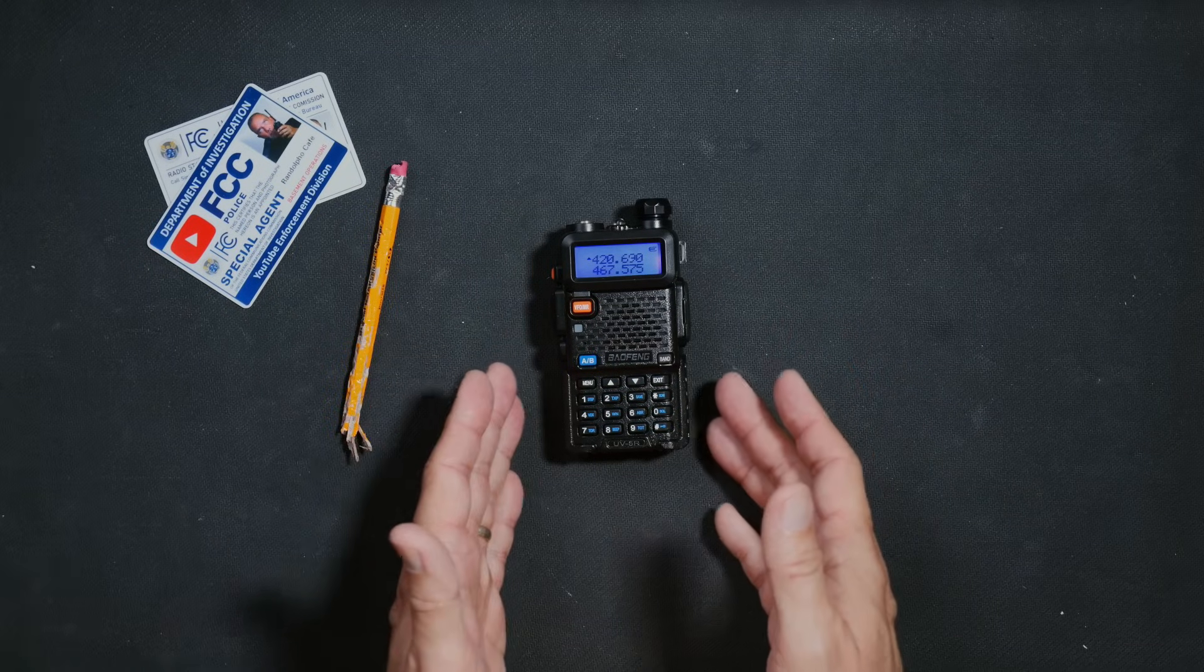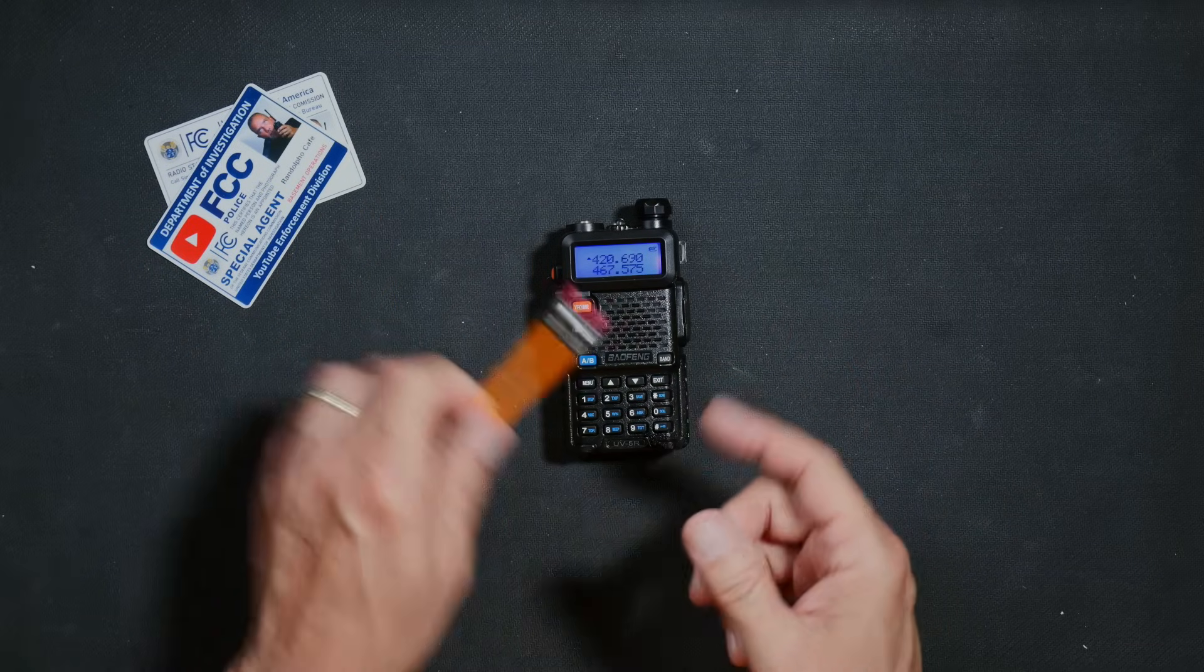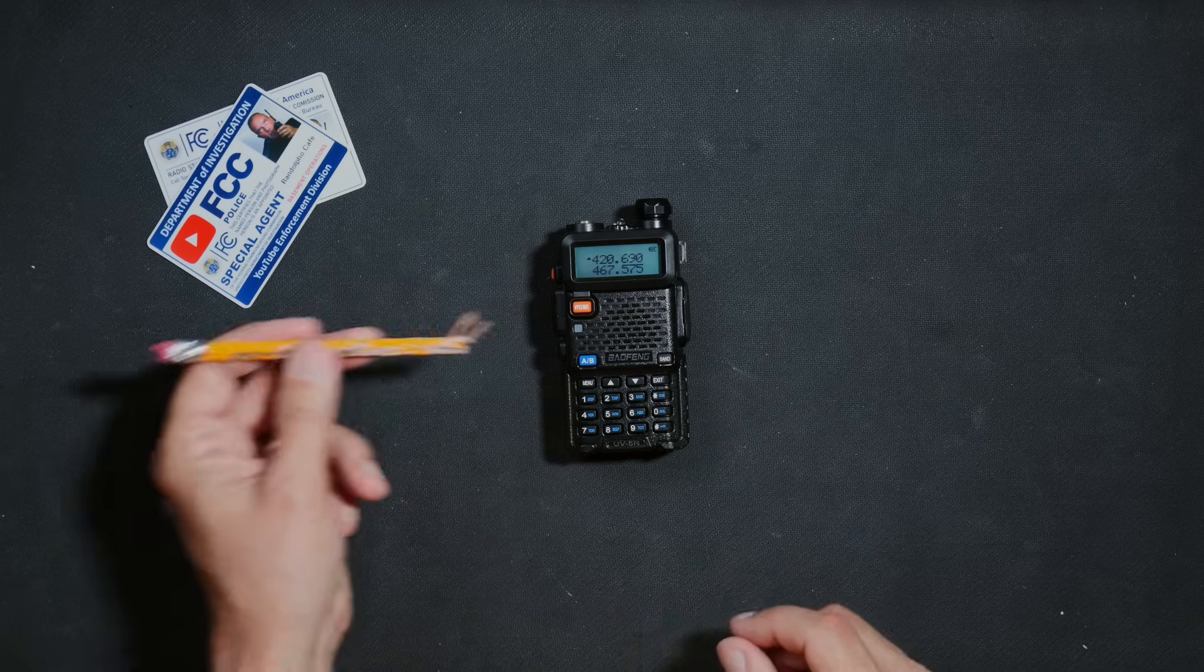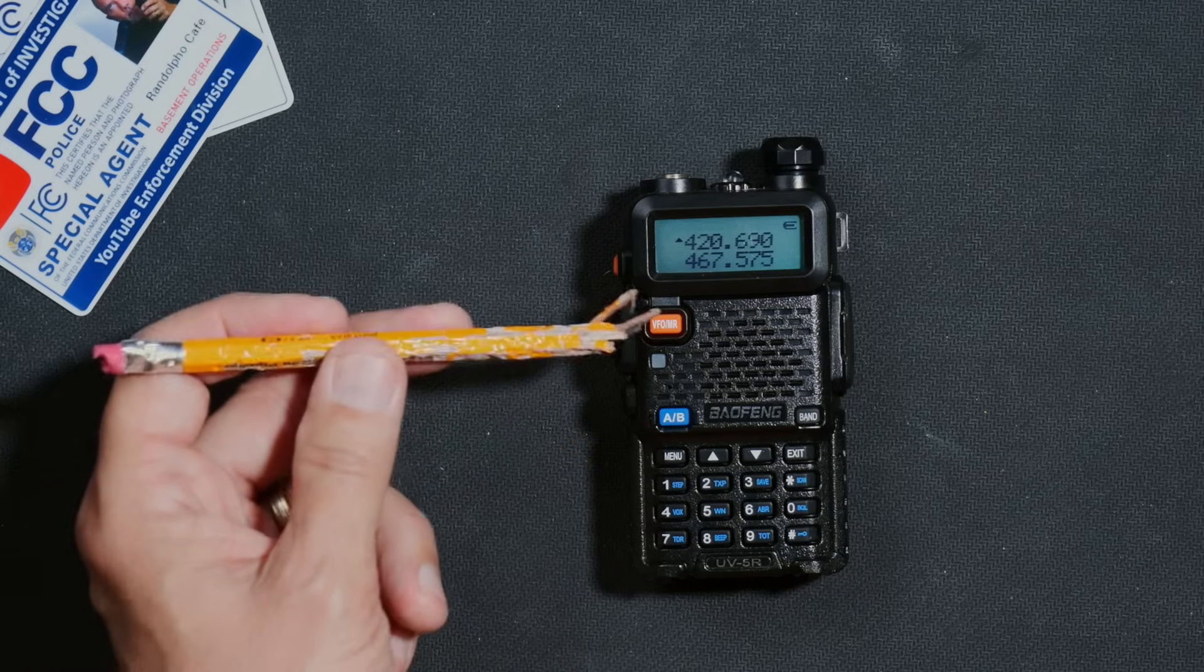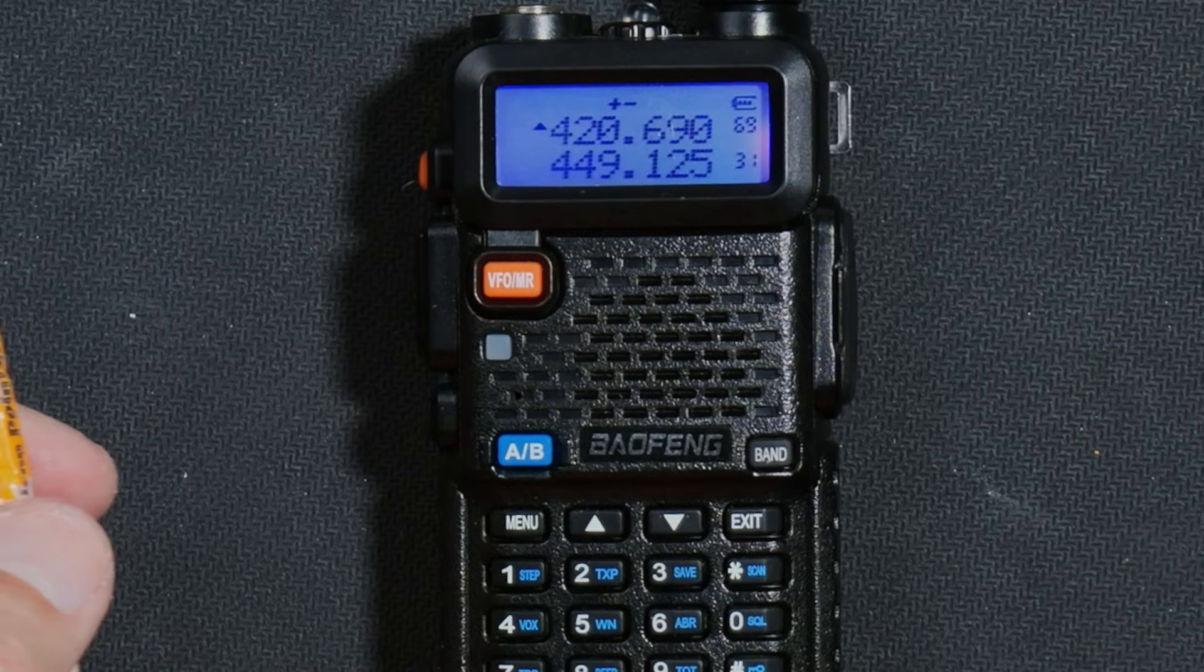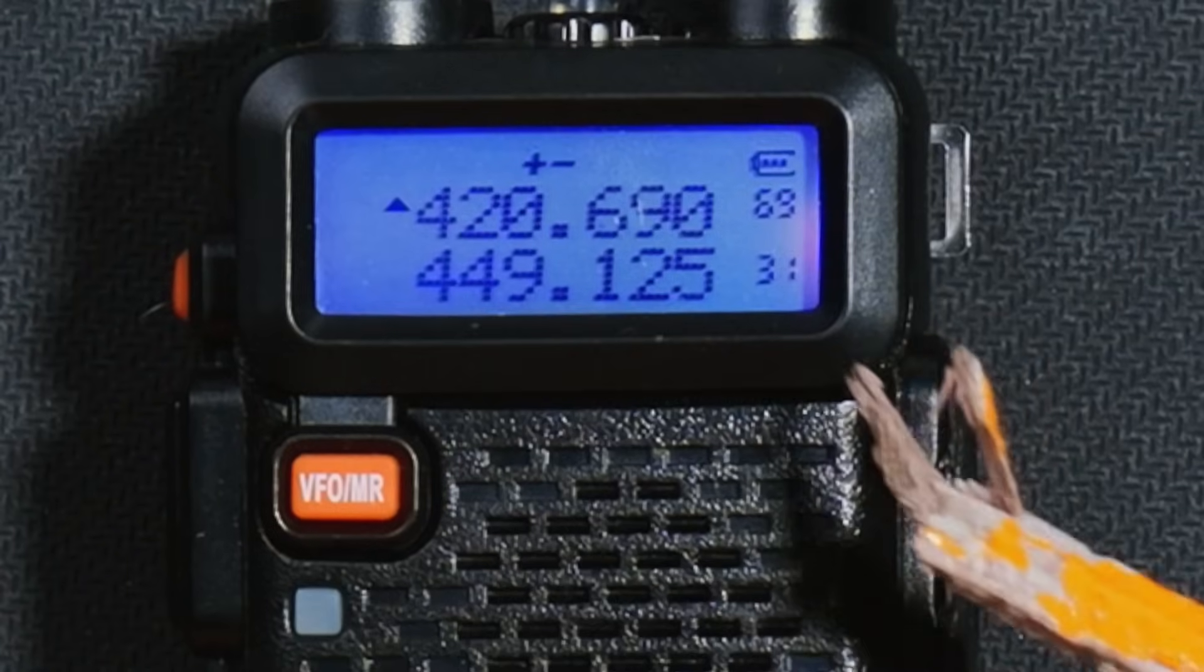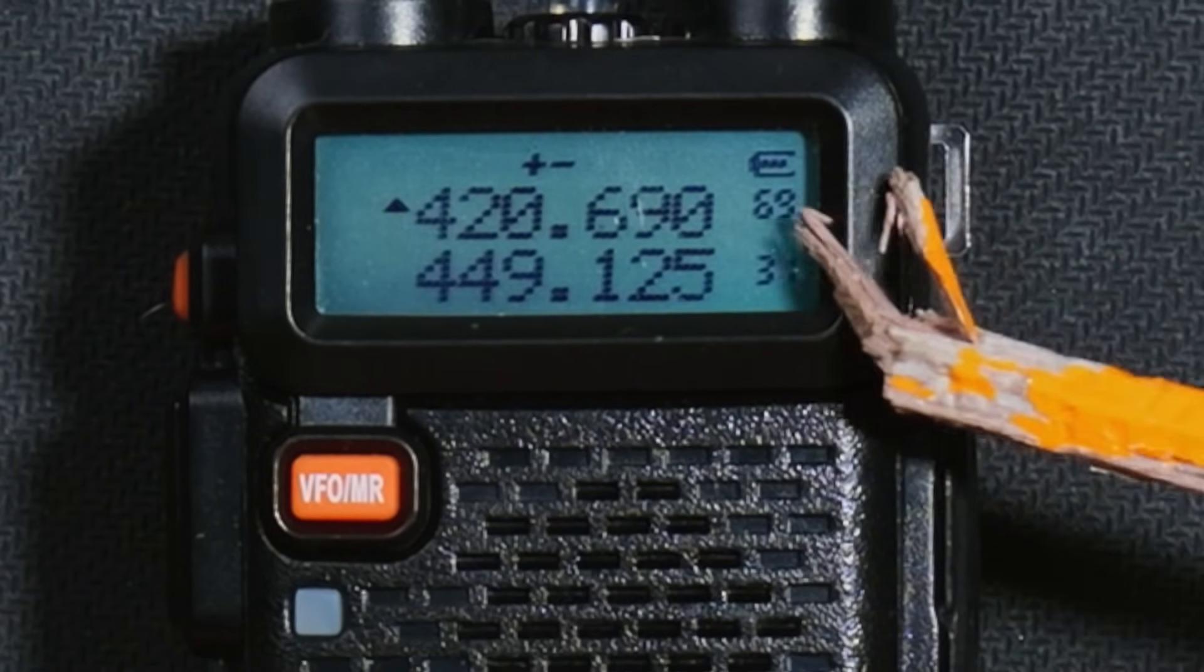To enjoy the channel that you just saved, you will now have to switch to channel mode, which, as mentioned only moments ago, is very easily done by crushing the big orange VFO MR button thusly. And right there before you is the very channel that I just saved, as indicated by the tiny channel number on the right.